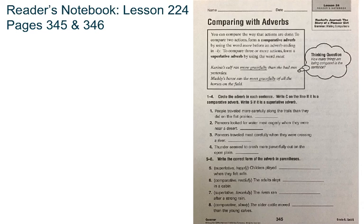Number one: people traveled more carefully along the trails than they did on the flat prairies. The comparative adverb here is 'more carefully,' and it's comparative because we're comparing two things — not more than two. We're comparing the trails to the flat prairies, so we're going to write C on the line.